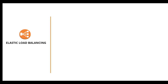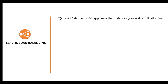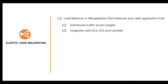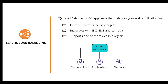Elastic Load Balancing uses a virtual machine or appliance that balances your web application load — HTTP or HTTPS traffic — across multiple web servers so no single server gets overwhelmed. It distributes traffic across multiple targets, integrates seamlessly with EC2, ECS, and Lambda, and supports one or more availability zones in a region. There are three types: Classic Load Balancer (ELB), Application Load Balancer, and Network Load Balancer.